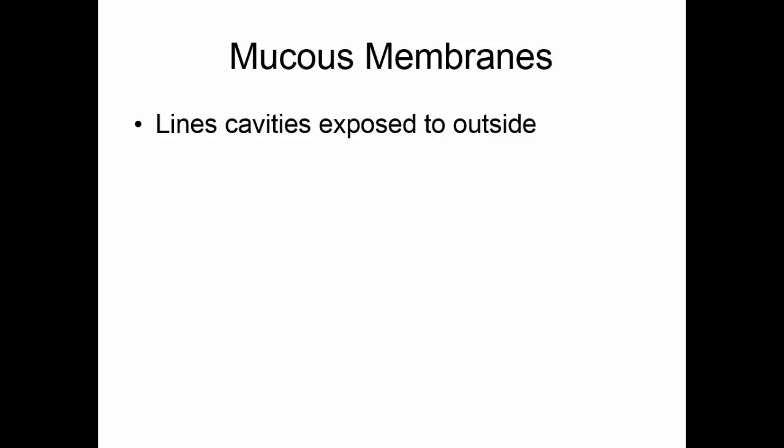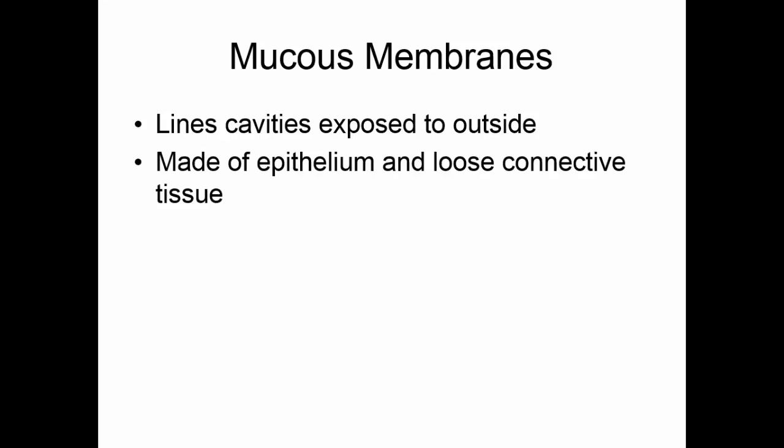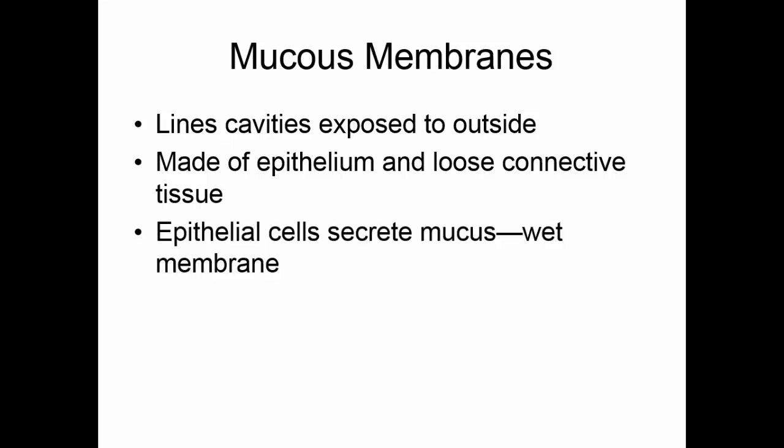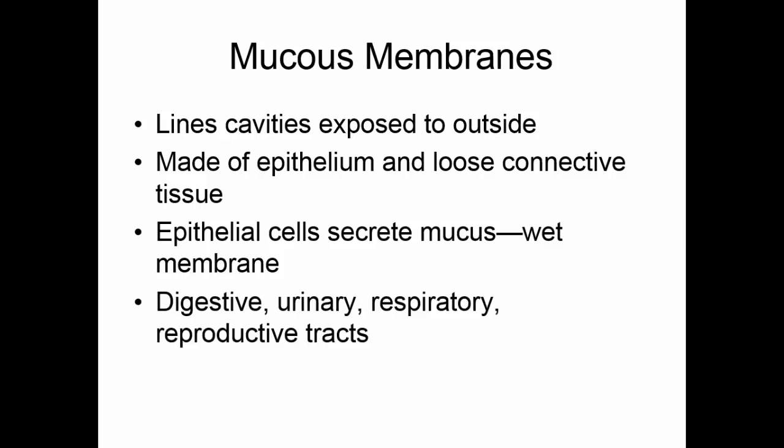Mucus membranes line cavities that have a natural opening to the outside. These are made of epithelium and some sort of loose connective tissue, which will vary depending upon the type of mucus membrane. The epithelial cells are capable of secreting mucus, which keeps these membranes moist, so they are known as wet membranes. Mucus membranes line the digestive tract, the urinary tract, the respiratory tract, and the reproductive tracts.